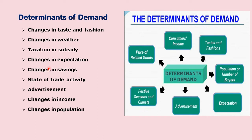The fourth determinant is changes in expectations. People's expectations about future price changes or income changes influence their current demand. The expectation of a rise in price in the future results in an increase in demand today. If you feel that there is going to be a price increase tomorrow, your demand today will increase. This is called expectations, and expectations also bring about a change in demand.